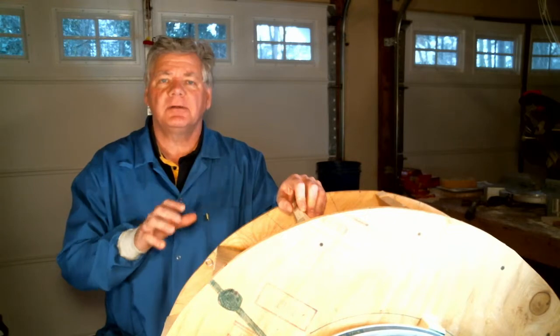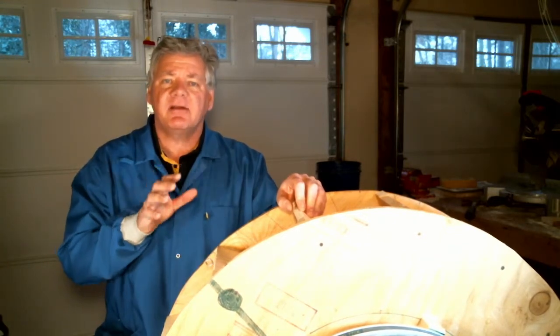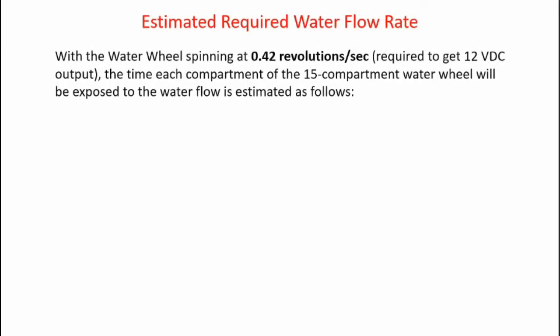The next question is how much water does it take to get the water wheel to spin at the necessary velocity? We can approximate the amount of flow rate we need as follows. If we assume the water wheel is spinning at 0.42 revolutions per second as required to get to 12 volts DC, the time each compartment of the 15 compartment water wheel will be exposed to the water flow is estimated.